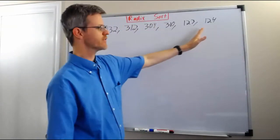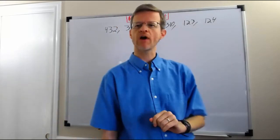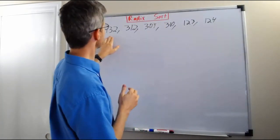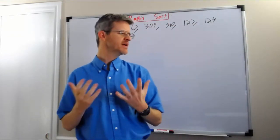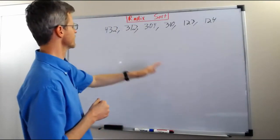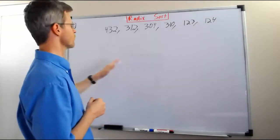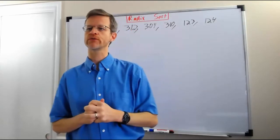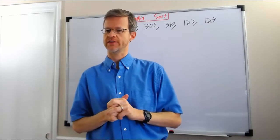Suppose that we have only three-digit numbers. Rather than comparing the values of the numbers — so comparing 432 to 312, for example — we could put them in numbered bins according to the first digit. So we put numbers into bins for 4, 3, 3, 3, 1, and 1. That would give us the numbers kind of sorted — sorted according to the first digit at least.